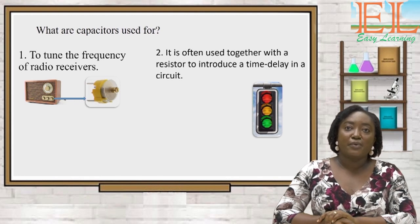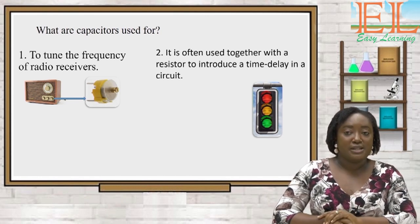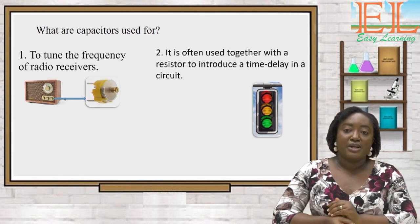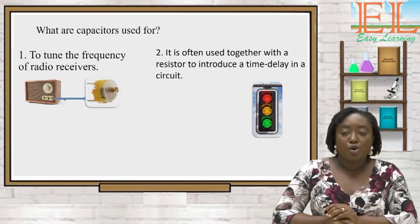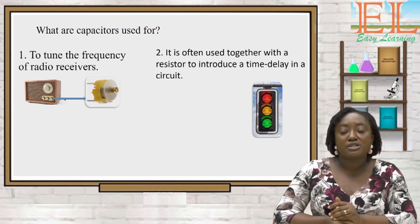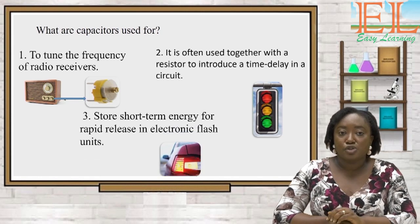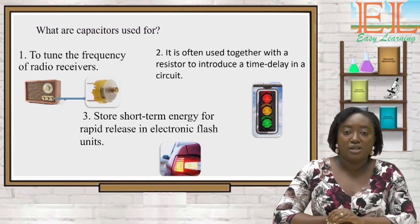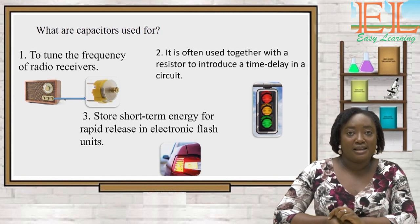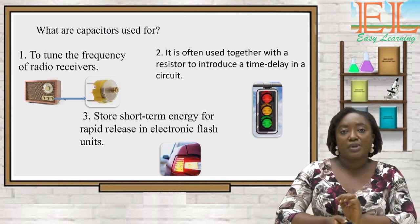Capacitors are often used together with resistors to introduce time delays in a circuit. An example is traffic lights: the red light comes on and stays on for some time, then goes off for the green light, which stays on before going off for the yellow light. These on-and-off delays are made possible by the combination of resistors and capacitors. Capacitors also store energy for short-term release, as seen in a car's indicator lights blinking on and off.